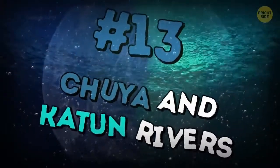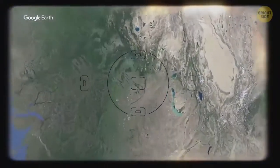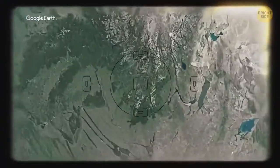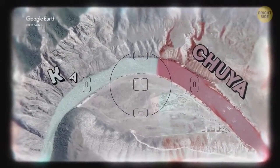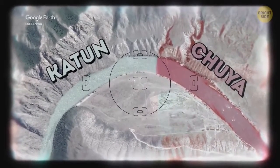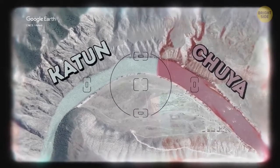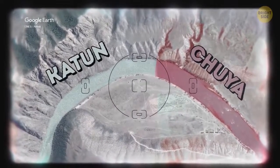Chuya and Katun rivers meet in the Altai Republic, Russia. The water of the Chuya has an unusual cloudy white color here and looks dense and thick. Katun is clean and turquoise. Flowing into each other, they form a single, two-colored flow that does not mix for some time.